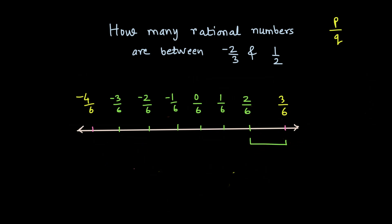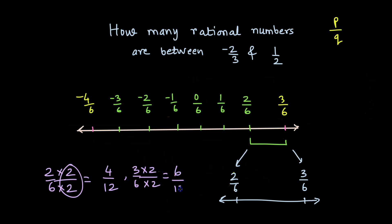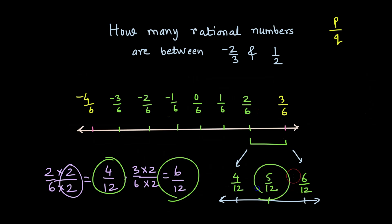All these distances are 1/6. Focusing on the distance between 2/6 and 3/6: can I represent them as equivalent fractions? Multiplying numerator and denominator by 2, I get 4/12 and 6/12. Now I can see that 5/12 is between them. Just by finding equivalent fractions, I found another rational number between 2/6 and 3/6, and there must be more between the other pairs as well.